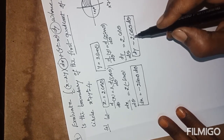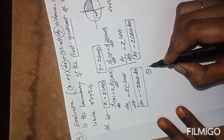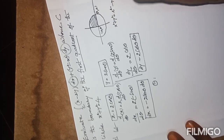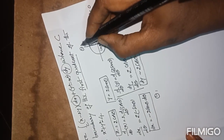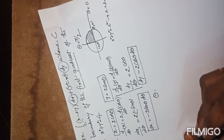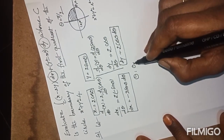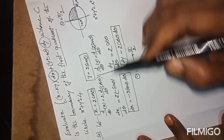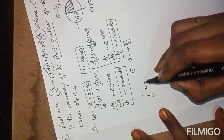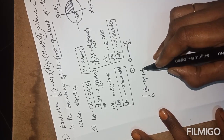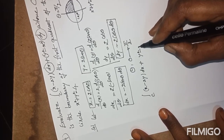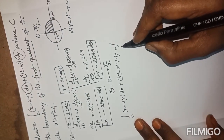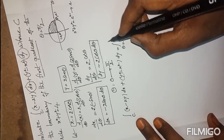Next we need the theta limits. According to the given question, the curve is in the first quadrant, where theta varies from 0 to 90 degrees, that is from 0 to π/2. Now we can integrate the given function by substituting all these expressions. The integral over C becomes an integral from theta equals 0 to π/2.